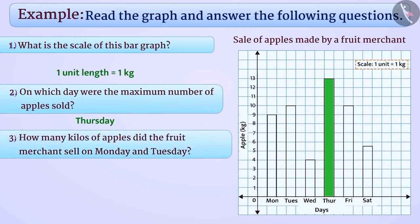Question 3: How many kilos of apples did the fruit merchant sell on Monday and Tuesday? Monday is marked by 9 unit lengths of a bar and Tuesday by 10 units.